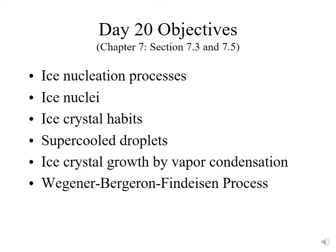Welcome to Atmos 5000, Day 20. We're focusing on Chapter 7 of the Stull textbook, Sections 7.3 and 7.5, moving away from the condensation process on liquid droplets to the formation of ice crystals in clouds. Specifically, we'll be talking about the different types of ice nucleation and ice nuclei, the shapes of ice crystals, and then we'll introduce the concept of supercooled droplets and eventually get to how these ice crystals grow through the Wegener-Bergeron-Findeisen process.